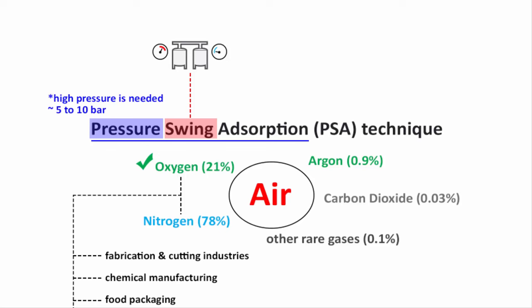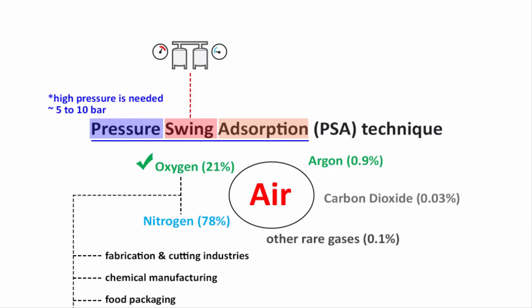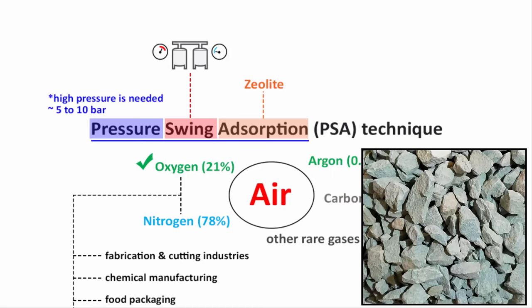The third word is 'Adsorption' — meaning something has to be adsorbed. Obviously, if you are producing oxygen, the other gases of atmospheric air need to be adsorbed. It is similar to absorption. For producing oxygen, zeolite is that adsorbent.